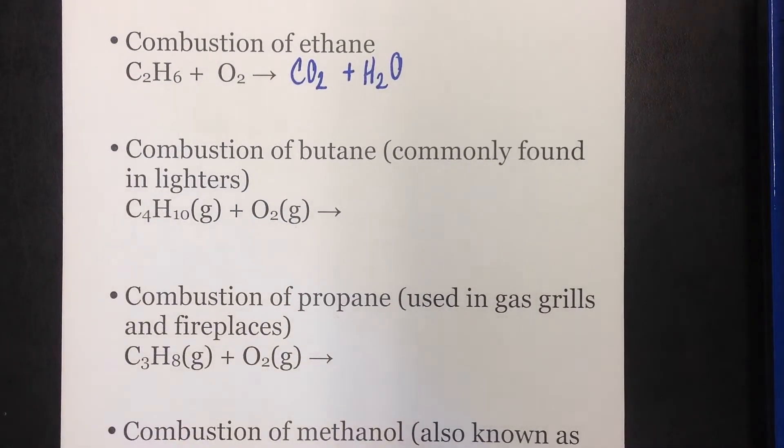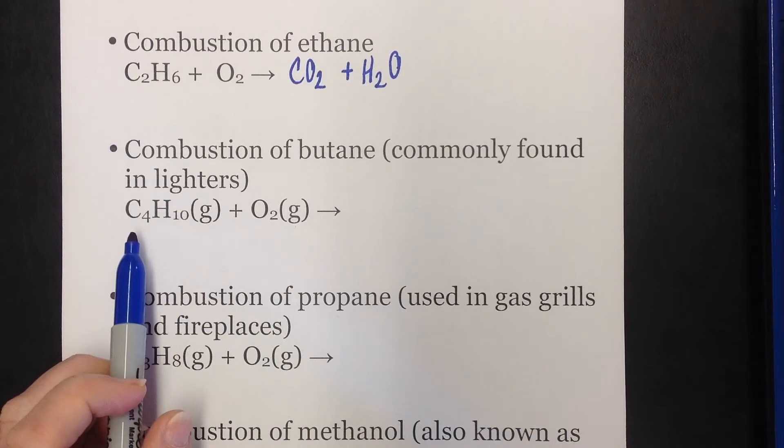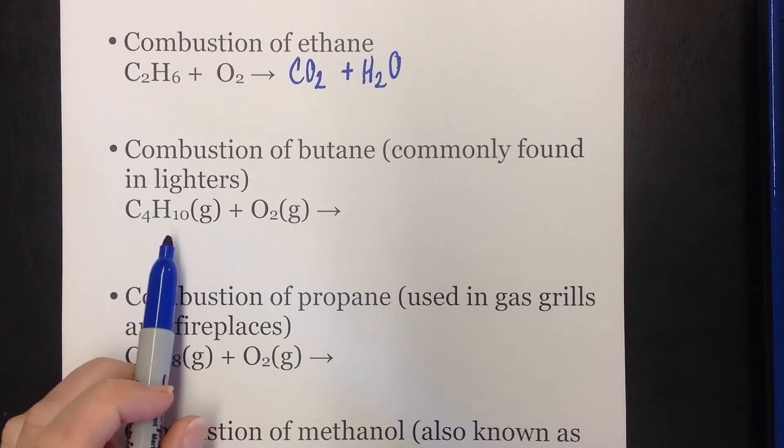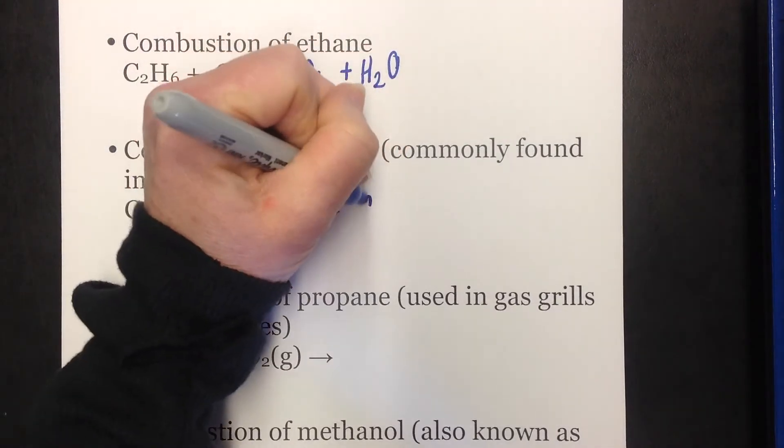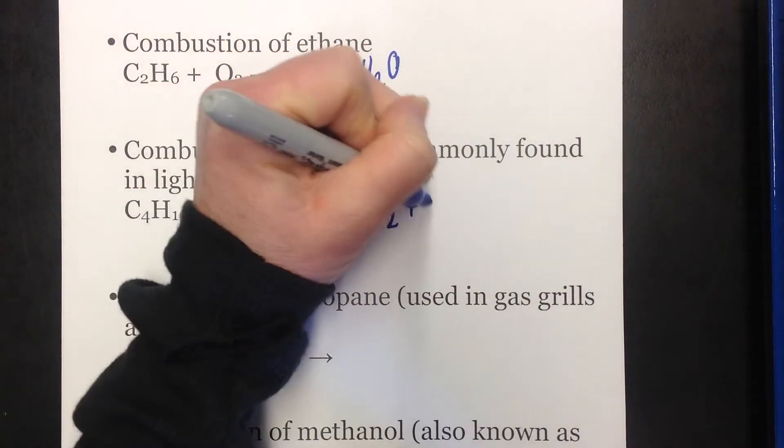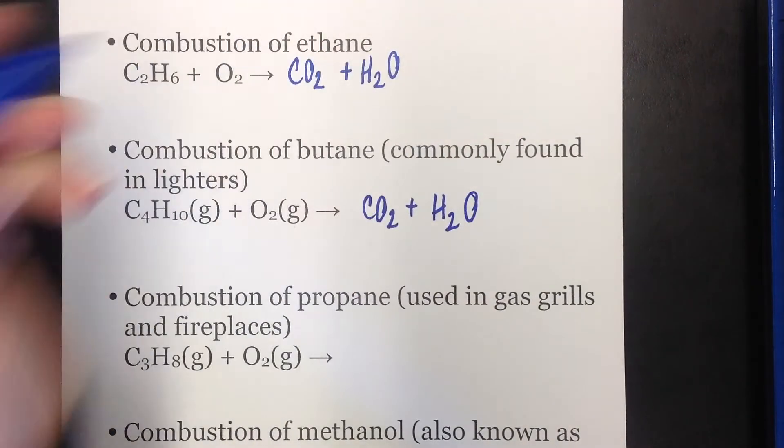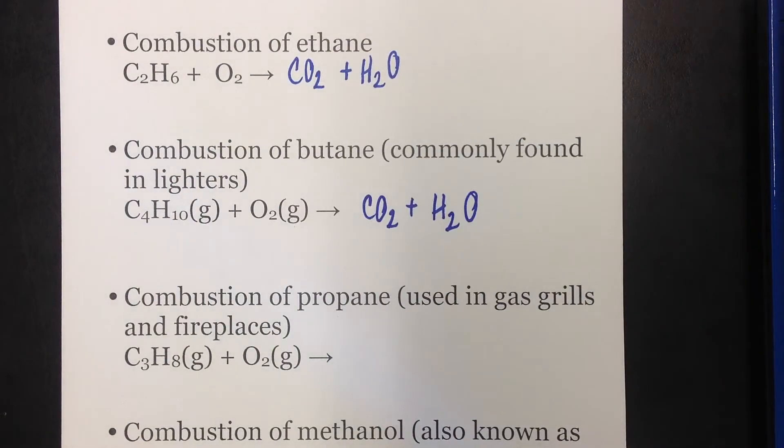The next one is combustion of butane. This is a fuel that we commonly see in lighters, and butane is C4H10, definitely a hydrocarbon. We are adding oxygen gas to that, and again we get CO2 and H2O. Same products. Why? Because it's combustion.